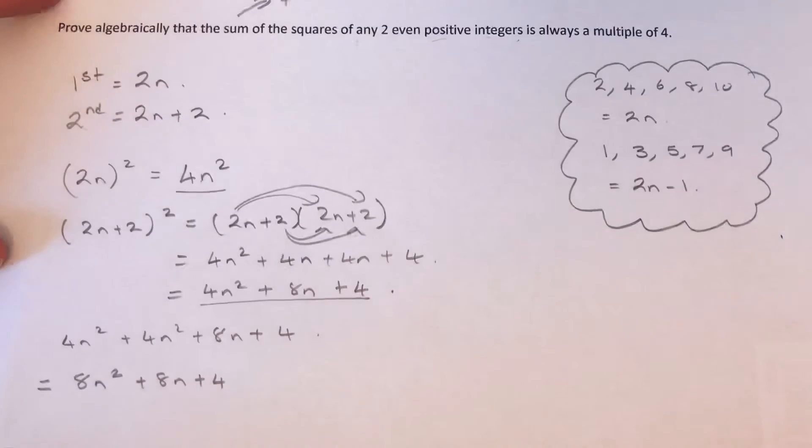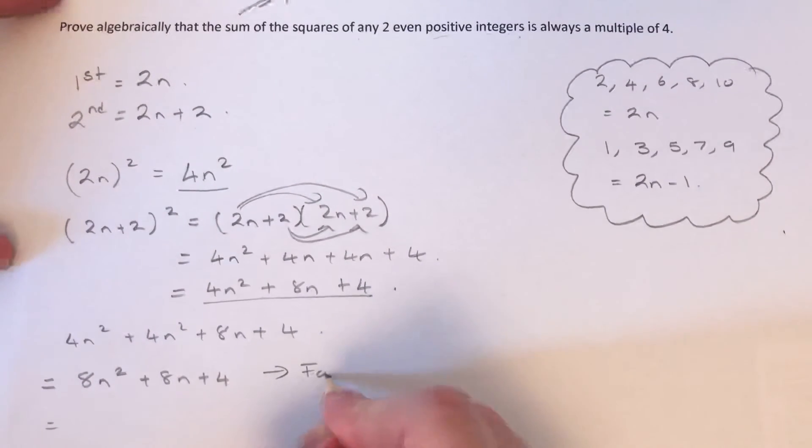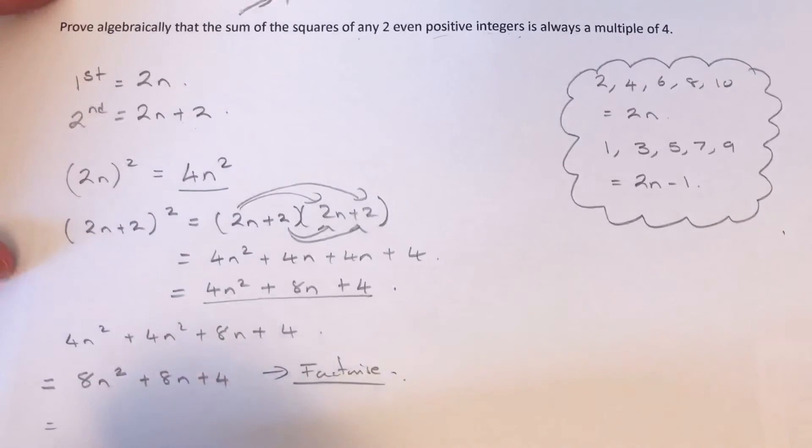So we've got to prove that it's a multiple of 4. So what I'm going to do is factorize this and put the factor of 4 at the start of the bracket.